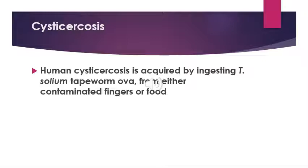Intraparenchymal cysticercosis is the most common form, occurring in more than 60% of cases. Onset of symptoms usually occurs 3 to 5 years following infection, but can occur more than 30 years after infection. Seizures are the most common manifestation. Less common manifestations include altered vision, focal neurologic signs, and meningitis.